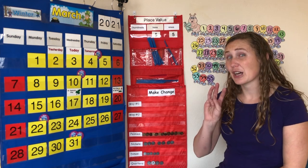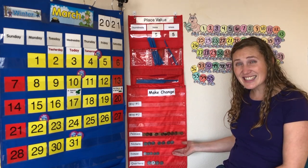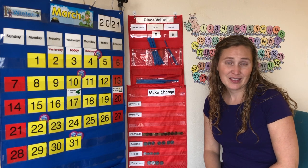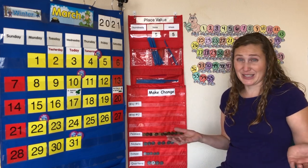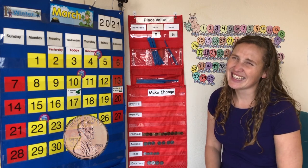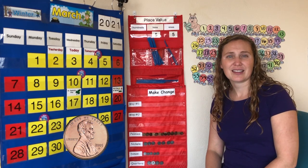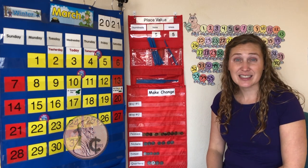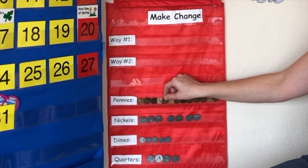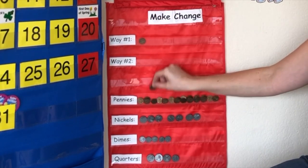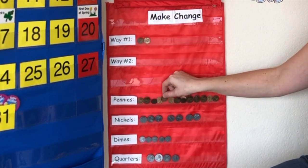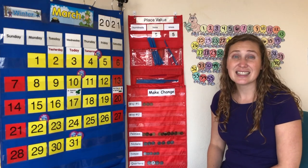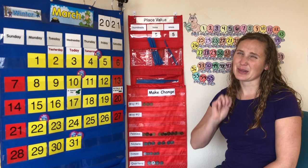What coin should we use? Pennies — you're right! How much is a penny worth? One cent. Let's count by ones. One, two, three. Three pennies. Three cents. The number three.